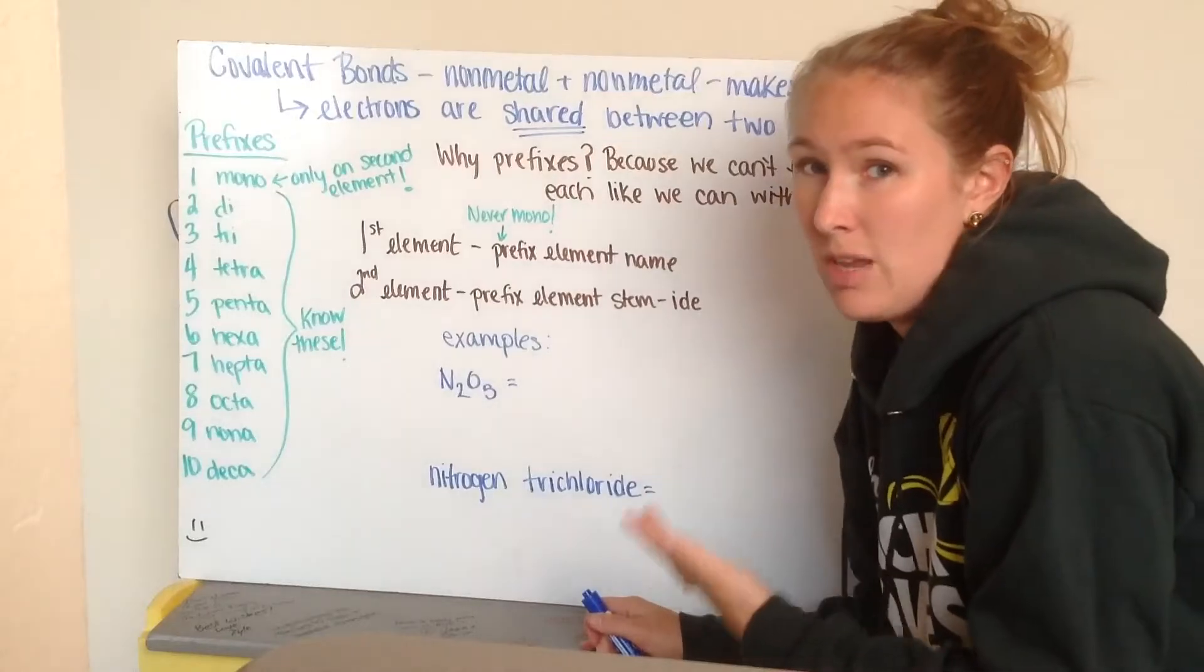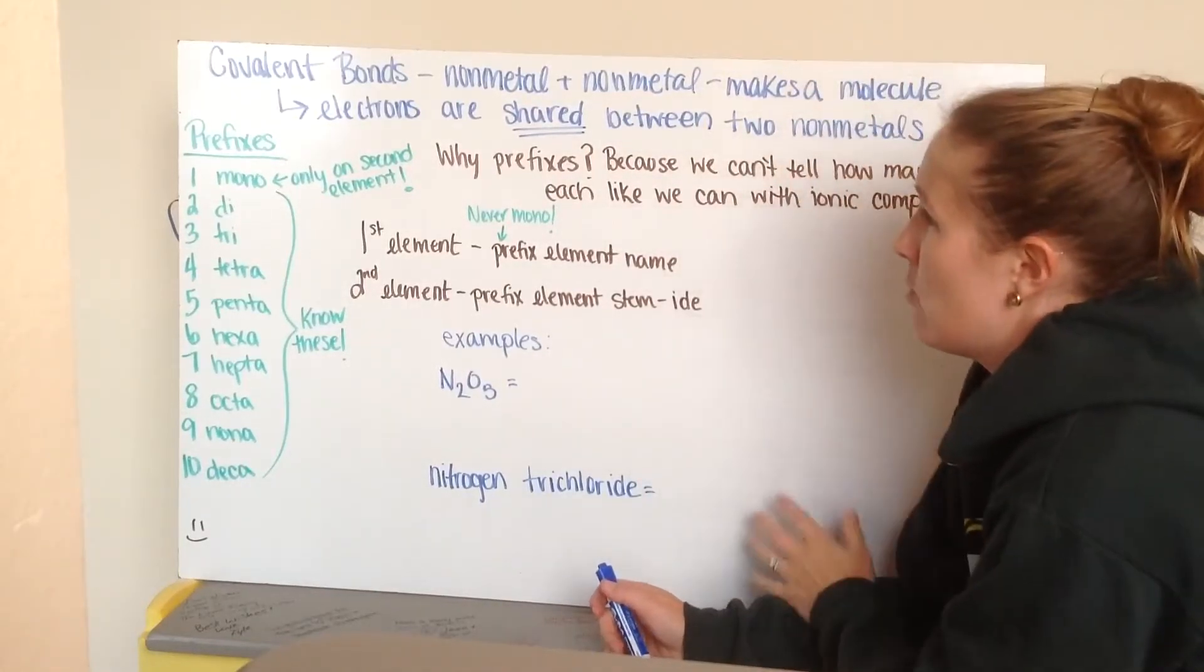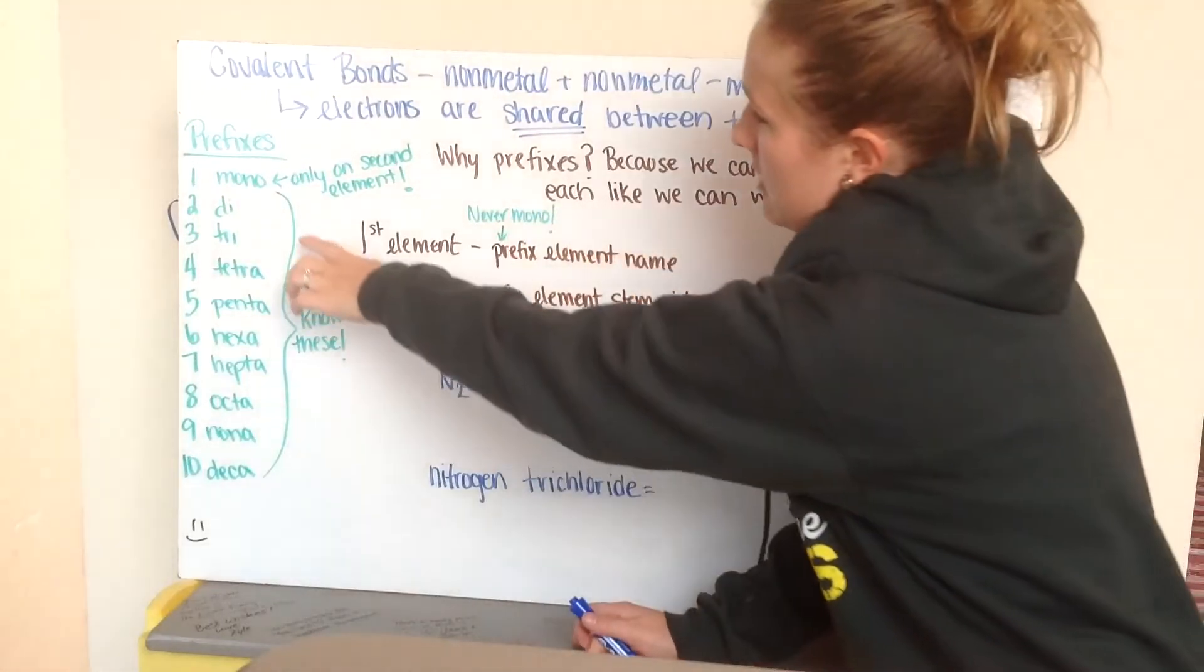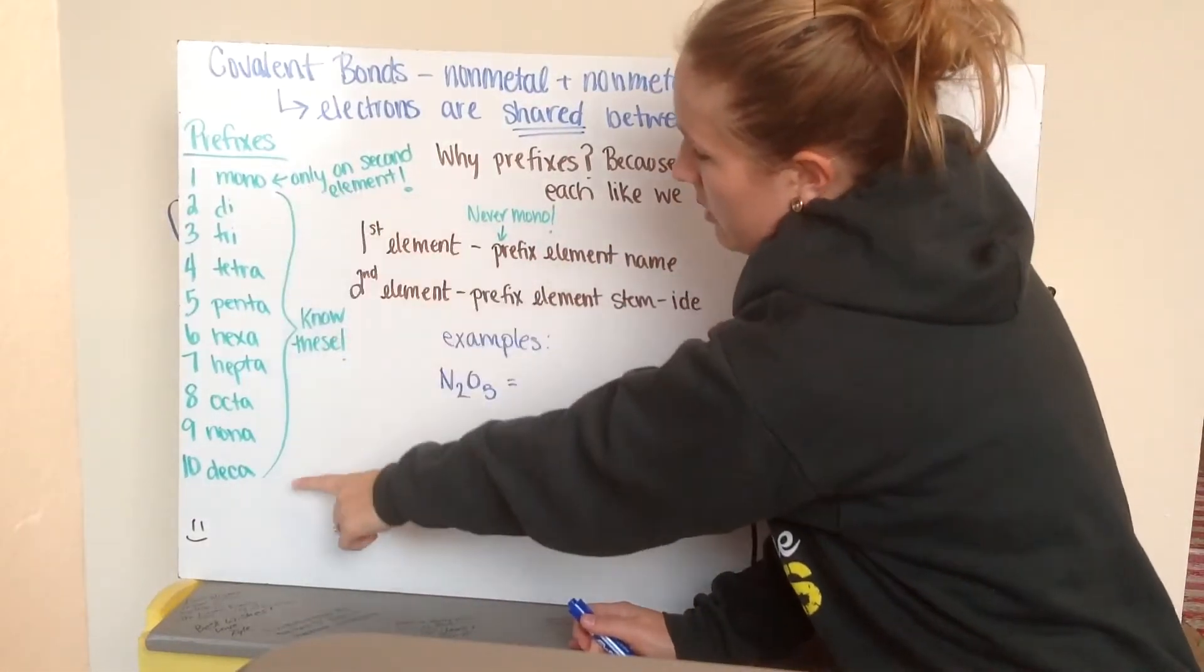And we can't tell, just looking at valence electrons, how many are shared. So, to tell how many we do have, we use prefixes. And these are the prefixes here. We need to have prefixes for 1 through 10.